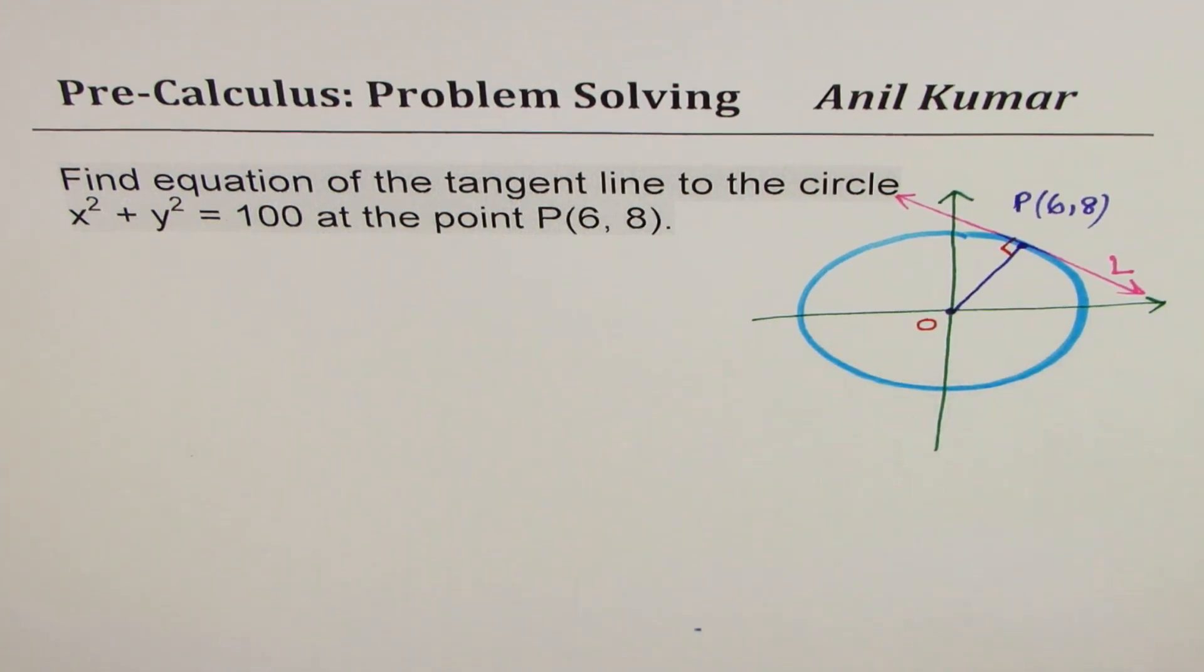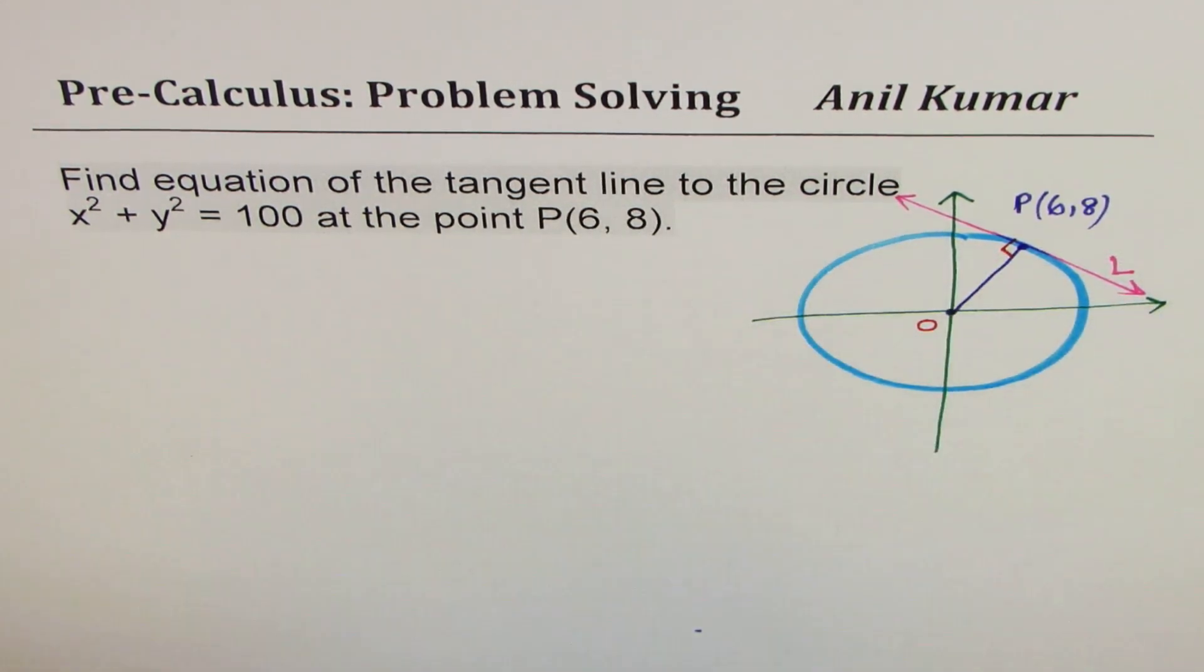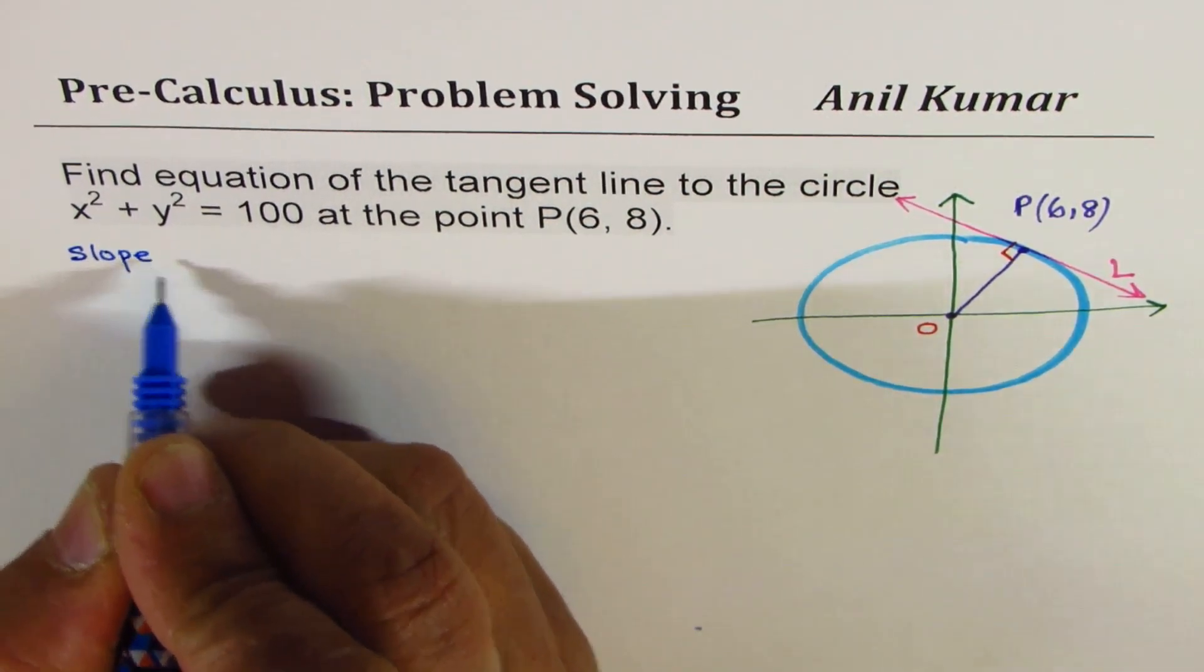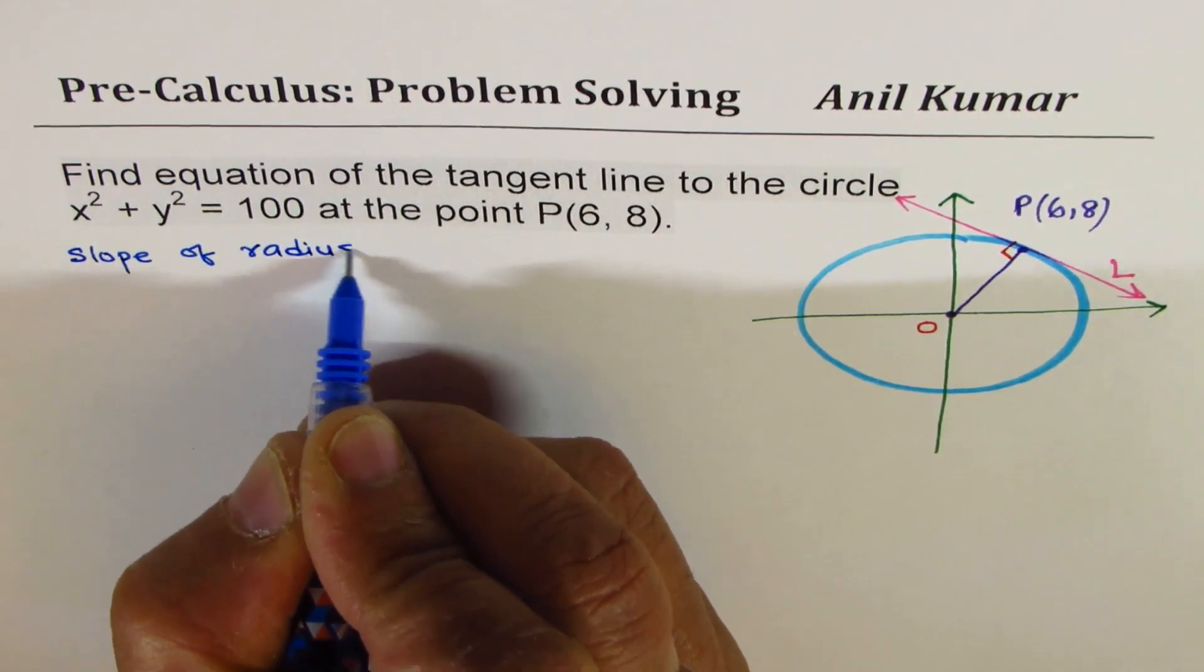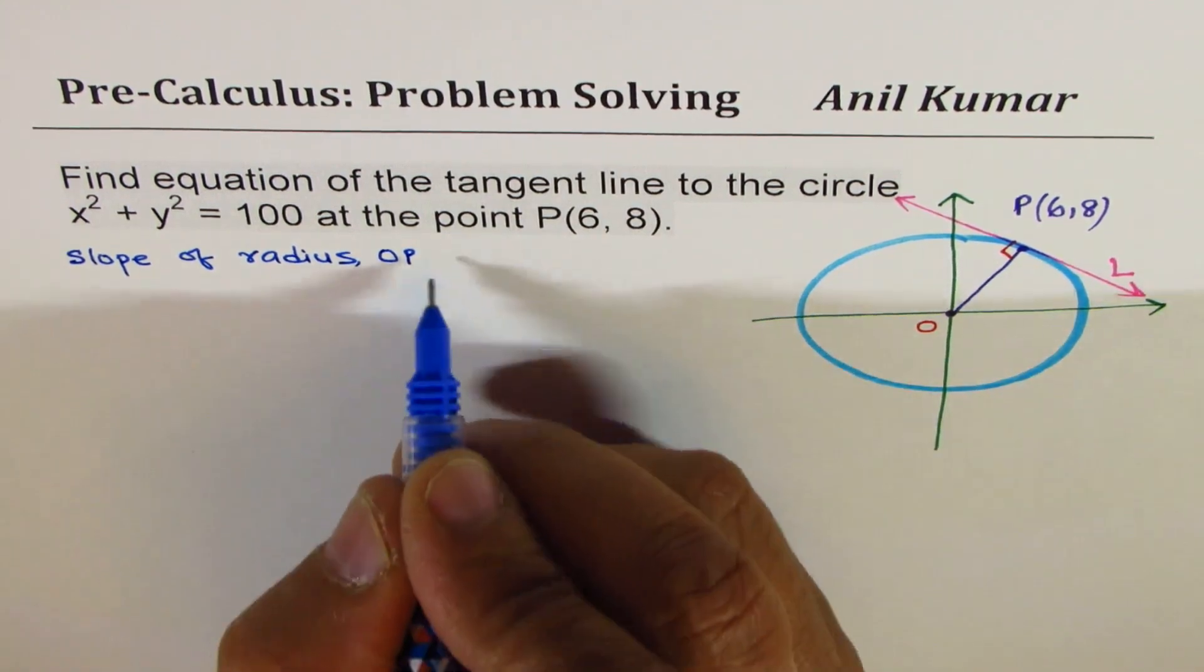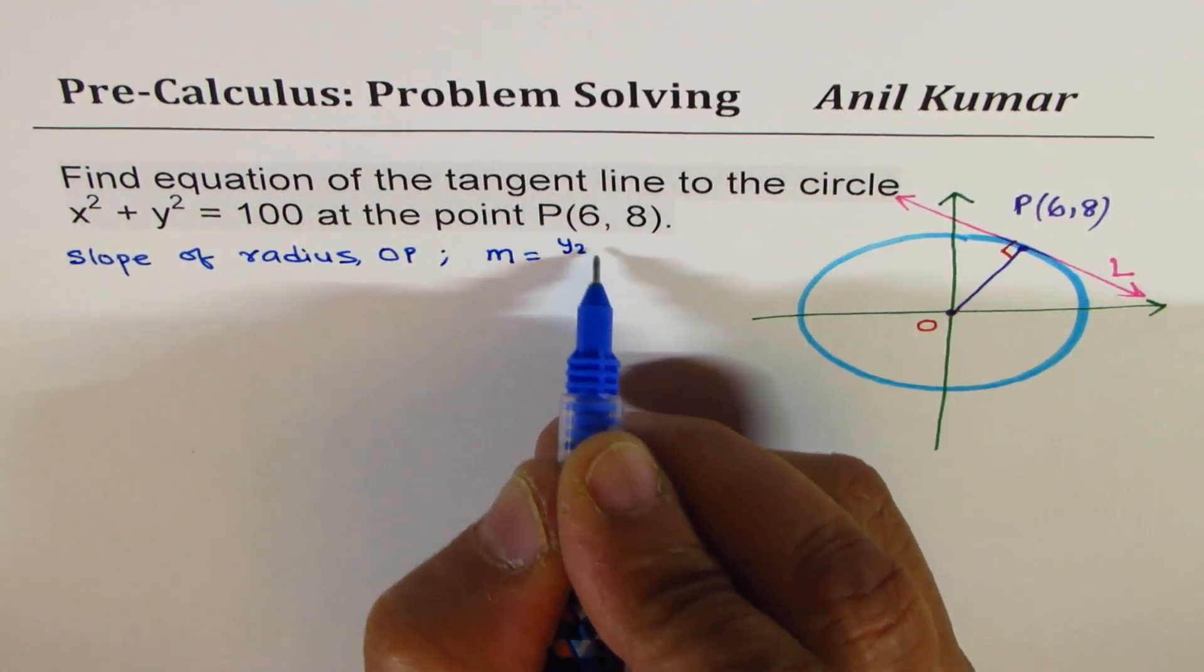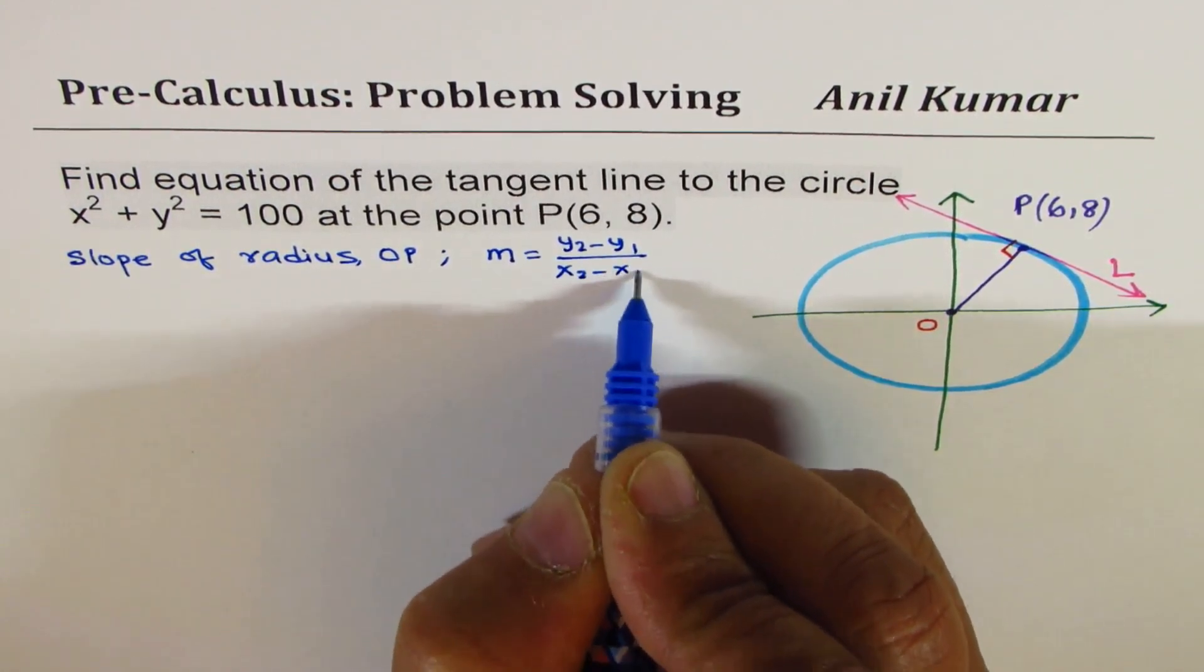And that gives you a hint. That is, the slope of the line is negative reciprocal to the slope of the radius. Do you see? So the strategy here is to find slope of radius OP, that particular line OP.